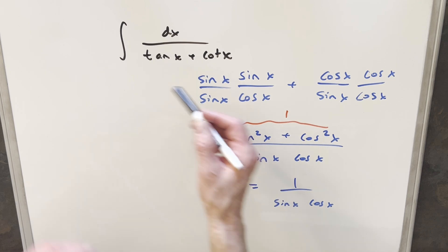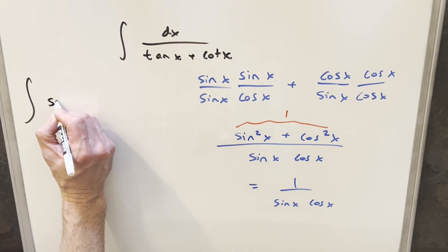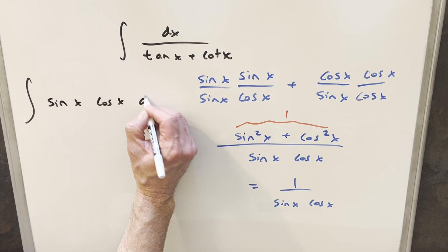So now let's just take this and put it back into the integral. But because we have 1 over sine x, cosine x in the denominator, I can flip it and bring it into the numerator and write this as just sine x, cosine x dx.